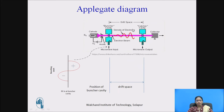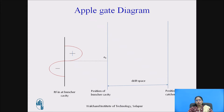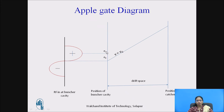This is the Applegate diagram. The RF input is provided at the input cavity, also called the buncher cavity, and RF output is obtained at the catcher cavity. The electrons emitted at the zero reference point of the RF cycle are called reference electrons, which move with reference velocity v₀ and reach the catcher cavity at the reference point. The electron emitted late after the reference electron is called the late electron, which moves with increased velocity v greater than v₀.